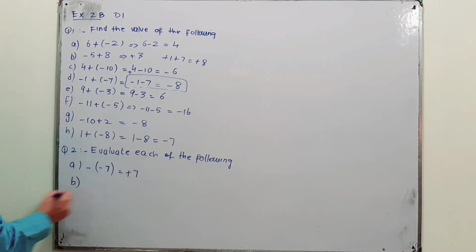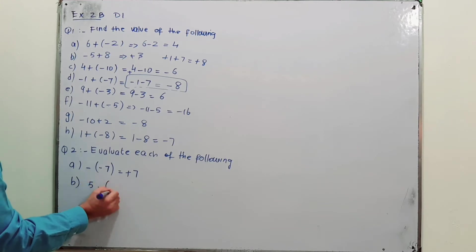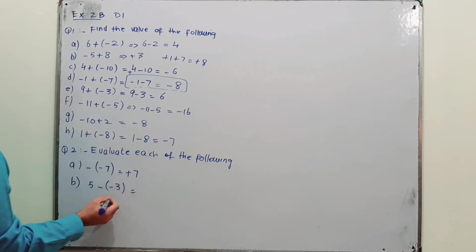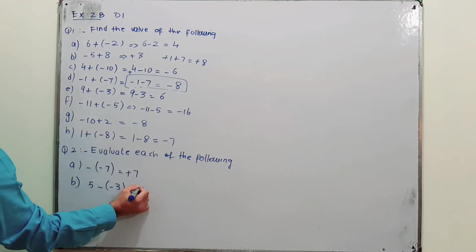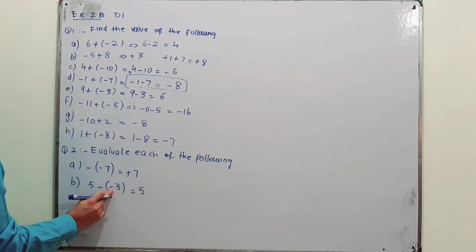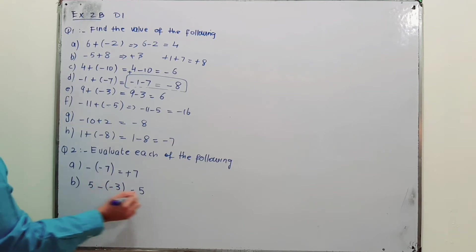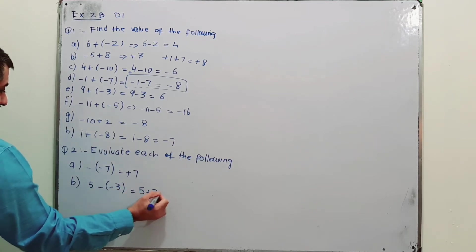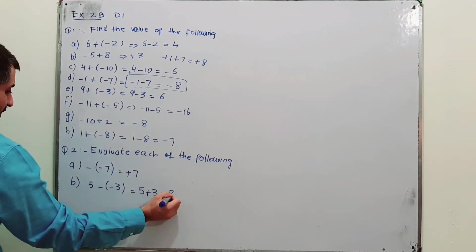Part B: 5 minus (minus 3). When you open the brackets, minus times minus is multiplied — they convert to plus. So 5 plus 3 equals 8.